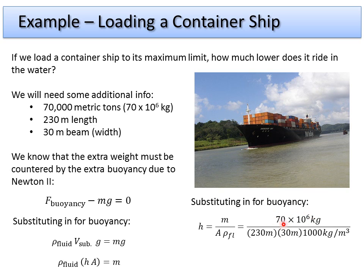We have our added mass of 70 million kilograms, our area of 230 times 30 meters squared, and the density of the fluid at 1,000 kilograms per meter cubed — assuming fresh water; for salt water that number will be a little different. We calculate this out and it comes out to about 10 meters, or 33 feet.